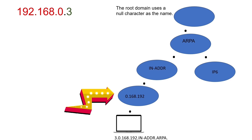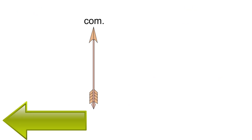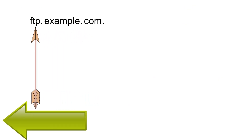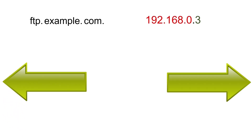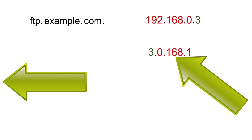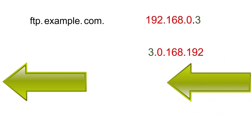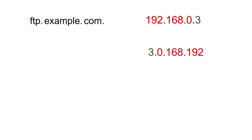To construct a domain tree for IP addresses, they used network addresses. But there was a problem: unlike domain names which are written from right to left in fully qualified domain names, network addresses are written from left to right in IP addresses. To solve this problem, they flipped the IP addresses in the domain tree. For example, the IP address 192.168.0.3 will be written as 3.0.168.192 in the domain tree.